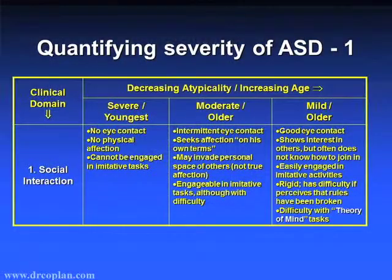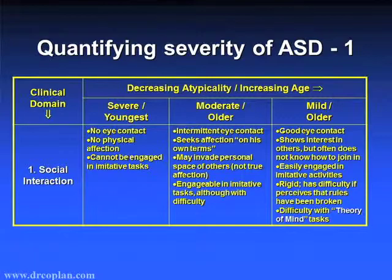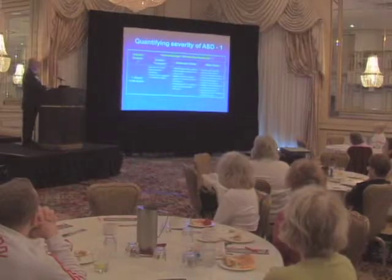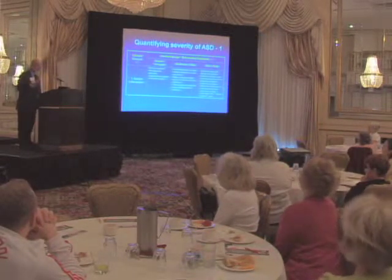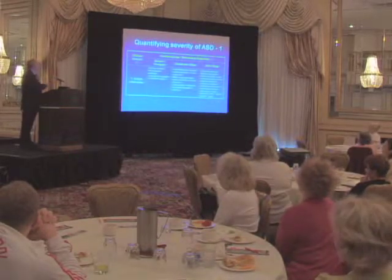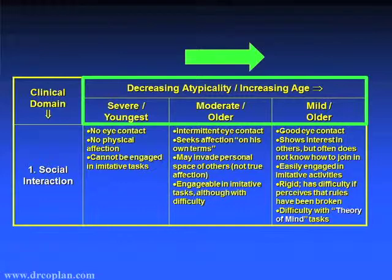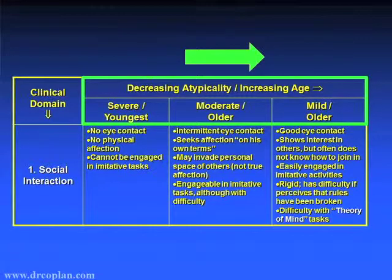This table is in the PDF — do not try to copy it down. What I want to point out are the column headings. We've got two different dimensions both running in the same direction: severe, moderate, mild — and youngest, older, and still older. That's to get the message across that everybody goes in that direction from left to right, and they improve over time.